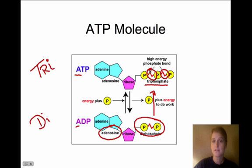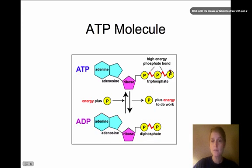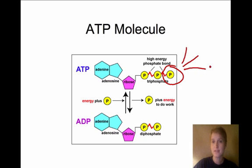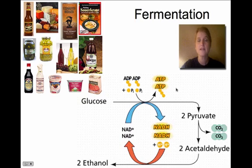Now when there's energy needed by the cell, the third molecule right here breaks off, that bond is broken, and when that bond is broken then pow the energy is released. And once that bond is broken and the energy is released you have an ADP molecule again, and then ADP molecule goes back through this process of cellular respiration and a phosphate molecule is added and it becomes ATP again.